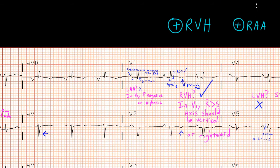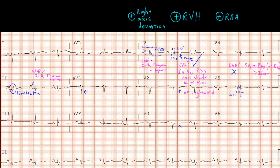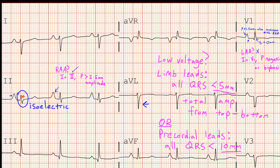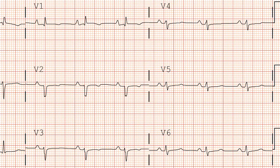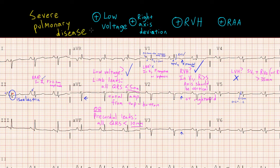So far we've got RVH and right atrial abnormality. Now let's look for signs of low voltage. Eyeballing these QRS complexes, they generally look pretty small. For low voltage, we look to see if the QRS complexes are less than 5 mm from top to bottom in the limb leads, or less than 10 mm in the precordial leads. In the limb leads, some QRS complexes are smaller than 5 mm and others are greater, so we don't meet limb lead criteria. But looking at the precordial leads, all QRS complexes are smaller than 10 millimeters — so we meet low voltage by precordial lead criteria. On this EKG, we've identified right ventricular hypertrophy, right atrial enlargement, low voltage, and right axis deviation — a constellation consistent with severe pulmonary disease such as emphysema. In this case, the patient had severe interstitial lung disease.